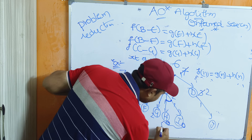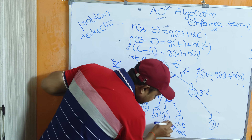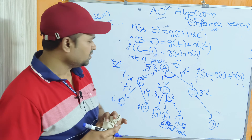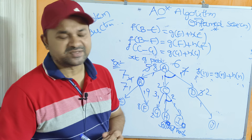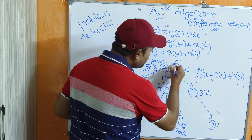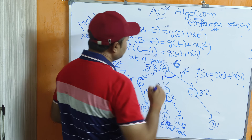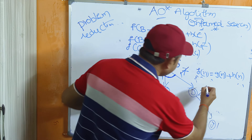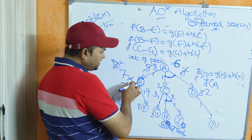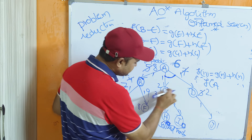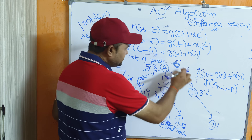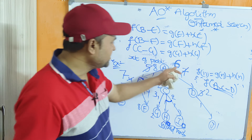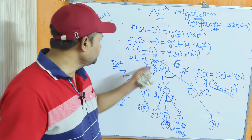H and I are now solved nodes because we reached the terminal nodes. Comparing the two paths: F(A→B) = 8 and F(A→C,D) = 6. The minimum cost is 6. Therefore, the best path is A→C→D with a cost of 6.